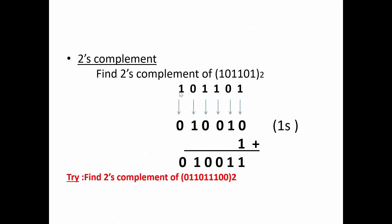Next, how to find the 2's complement: first find the 1's complement and then add 1 only to the last bit — the LSB. For example, find the 2's complement of 101101. First take 1's complement: 1 flips to 0, 0 to 1, 1 to 0, 1 to 0, 0 to 1, 1 to 0. Then add 1 only to the last bit: 0 plus 1 is 1. So this is the 2's complement of 101101.